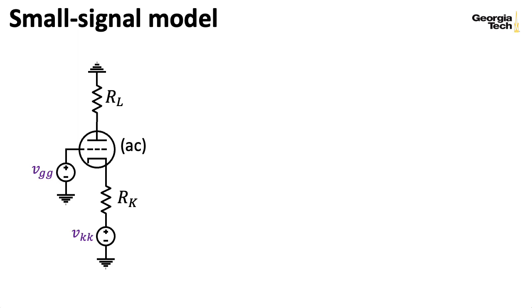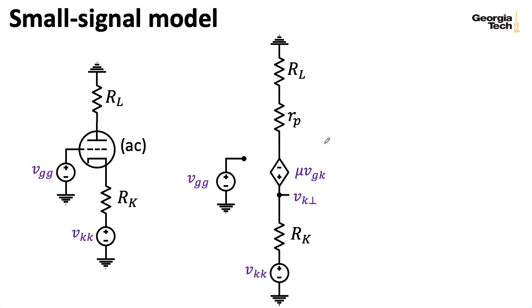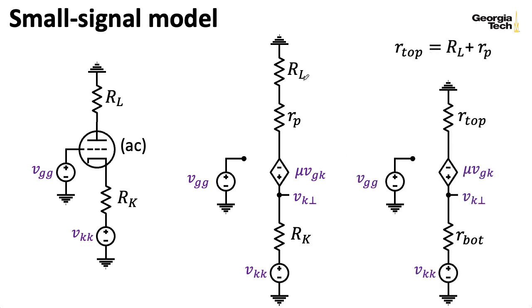All right, if I were to take that triode and replace it with the details of the series small signal model, where we have a dynamic resistance RP and a voltage controlled voltage source here. And remember, I'm using this upside down T here to represent ground. So this is the voltage at the cathode relative to ground. What I'm going to do is I'm going to abstract this a little bit further, combine this RL and RP into something I'm going to call R top and replace this RK with what I'm calling R bottom here, the resistance at the bottom of the circuit in contrast with the resistance at the top. So we can call that R bot.